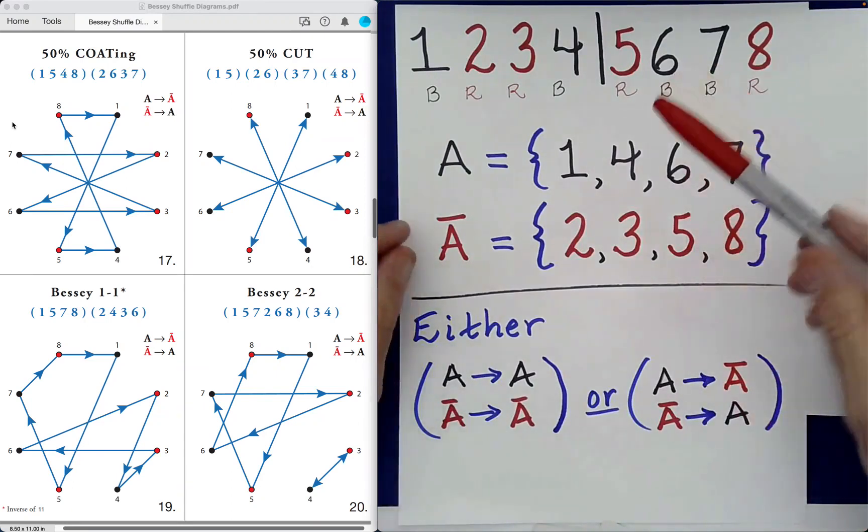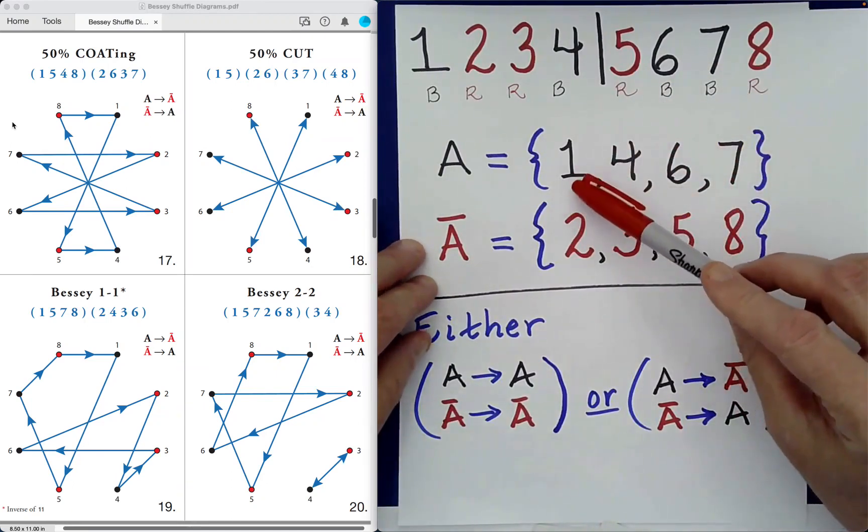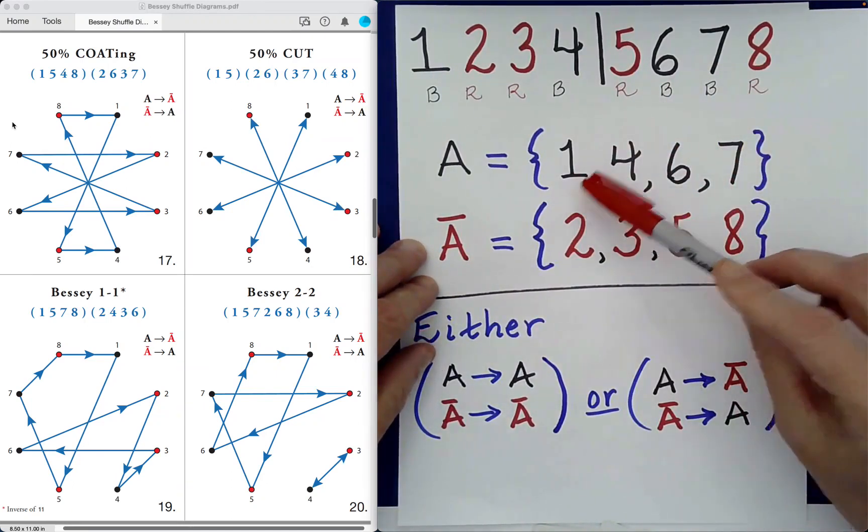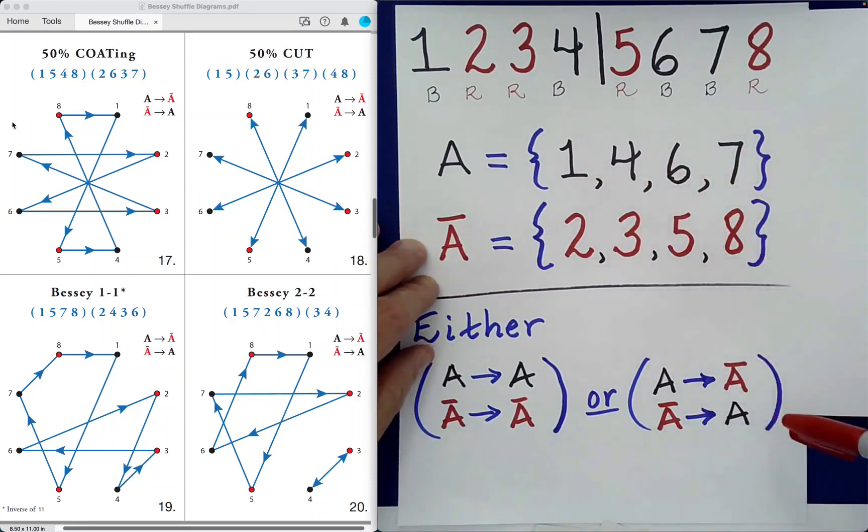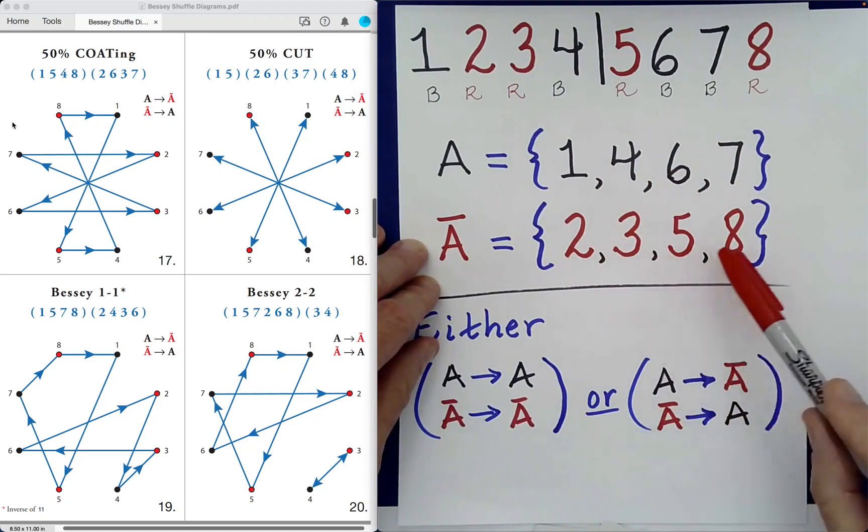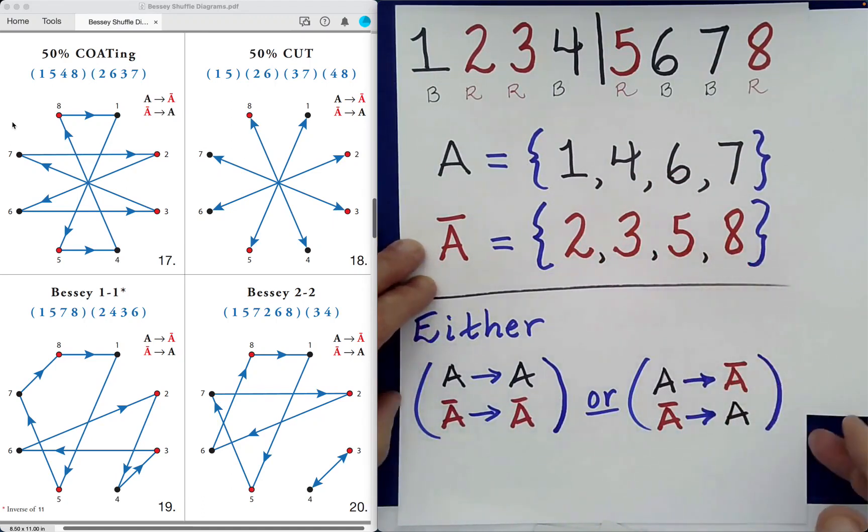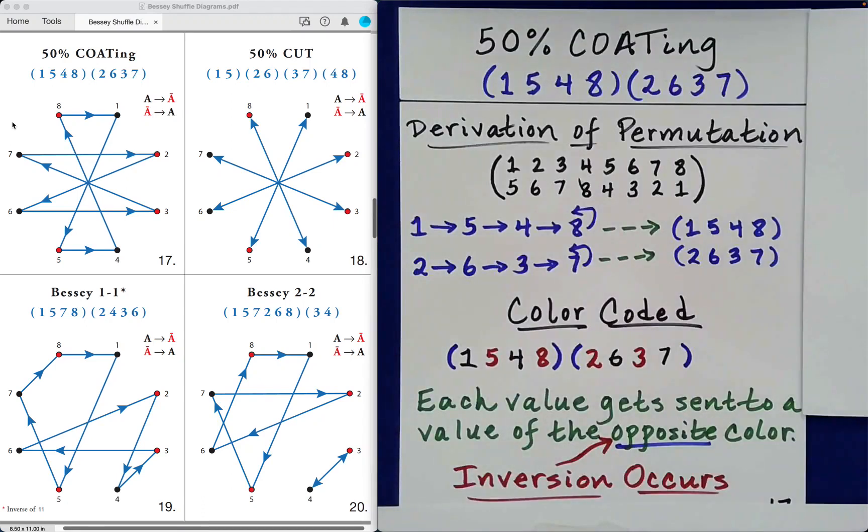So again, this means that the cards that originally began in positions 1, 4, 6, 7 have now moved to positions 2, 3, 5, 8 in some assignment. In fact, the assignment is given by our cycle description of the permutation.